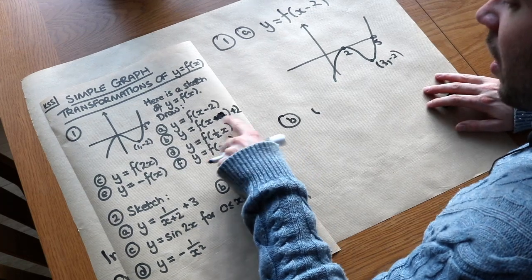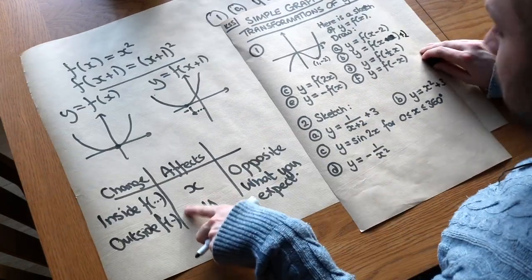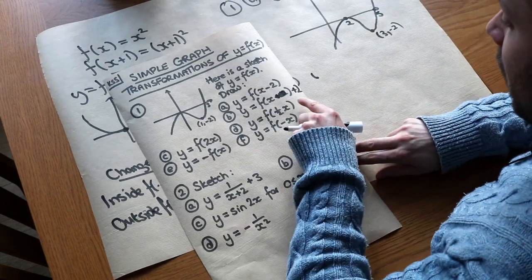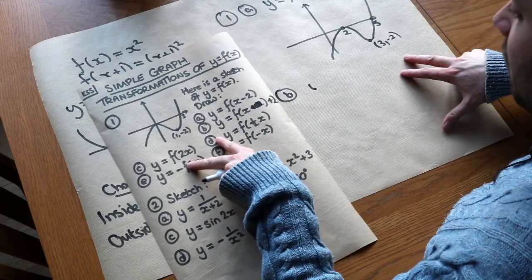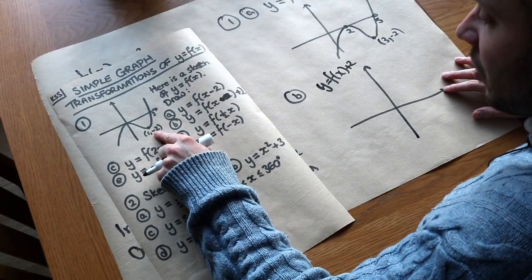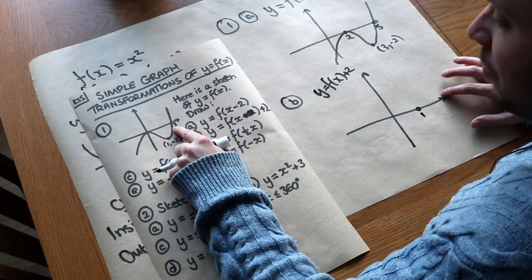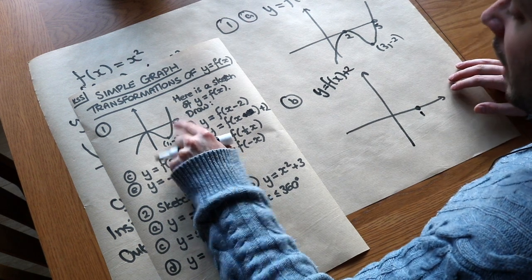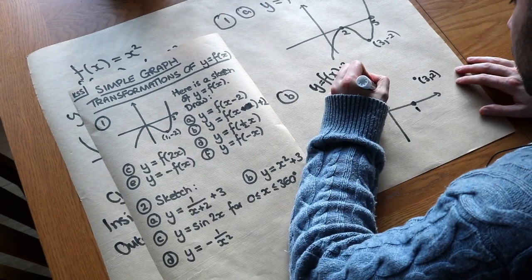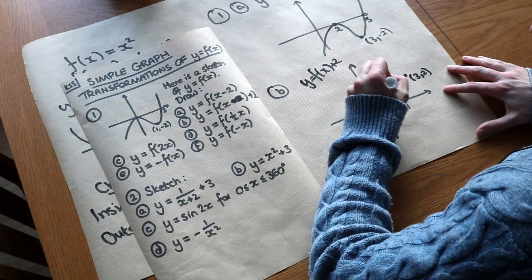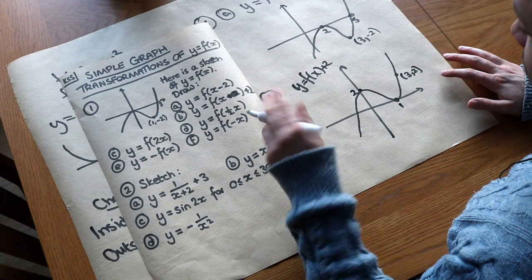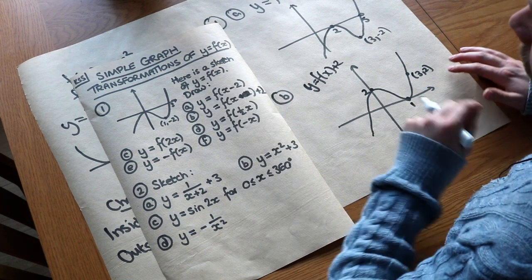For part b, we have y equals f of x plus 2. That plus 2 is outside the function, so it's going to affect the y values and does what you expect — it's going to translate the graph up by 2. The minimum point (1, −2) becomes (1, 0) after adding 2 to the y value. The point (3, 0) becomes (3, 2). The point (0, 0) goes up to (0, 2). We can then sketch it. There's no way to work out the root unless we have the original equation of the curve.